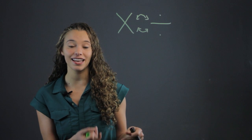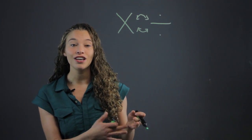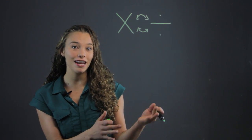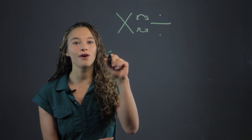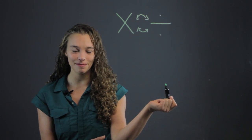So if you've already memorized that 3 times 9 is 27, you know that when you have 27 divided by 9, it's going to be that other piece, the 3. Or 27 divided by 3, it's going to be the 9.